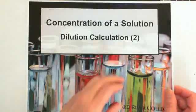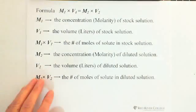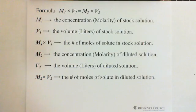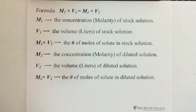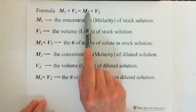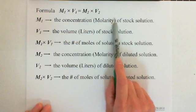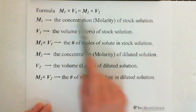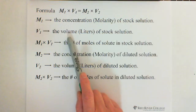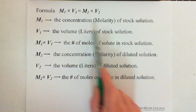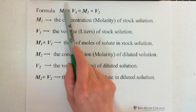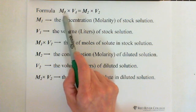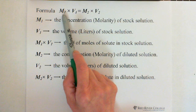The formula is M1V1 equals M2V2. M1 represents the concentration — molarity of the stock solution. In this formula, M1 and M2 refer to molarity. M1 is the concentration of the stock solution in molarity and V1 is the volume of the stock solution. By definition, we know that molarity equals number of moles of solute divided by liters of solution.